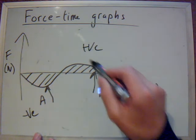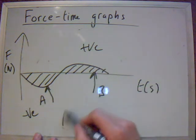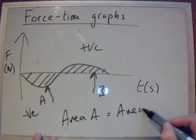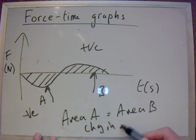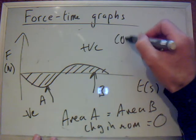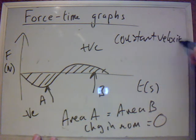and this is where they push off again. And what we're going to find is the area A equals area B, and therefore, overall, the change in momentum, the momentum of the system is equal to 0. If the change in momentum is 0, then there's going to be no resultant force, no acceleration, so it will give us a constant velocity.